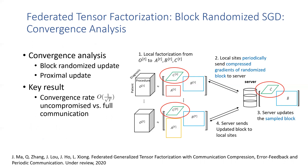We also account for the proximal update for the non-smooth regularizations commonly used in generalized CP tensor factorization. Our main theoretical result is that we can indeed reduce the communication without compromising the convergence rate, compared to full communication training under common assumptions.